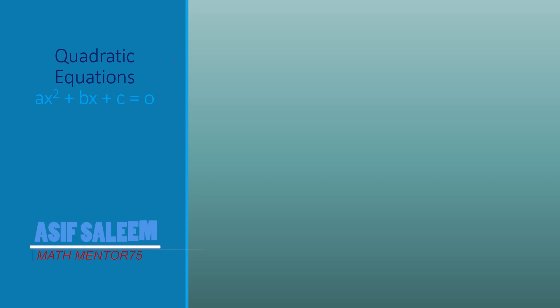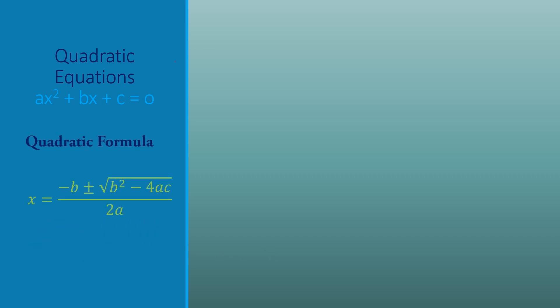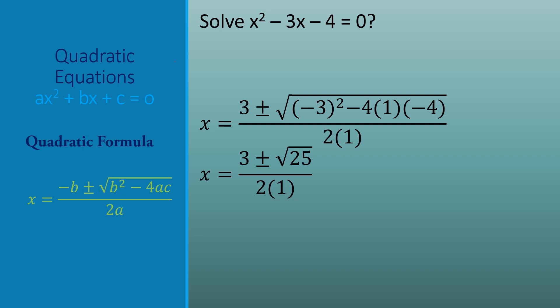The second method to solve a quadratic equation is the quadratic formula: x = (-b ± √(b² - 4ac)) / 2a. In this question, a = 1, b = -3, and c = -4. We plug in the values and simplify, taking the square root of 25, and we get the same roots — the same answer as using factorization.